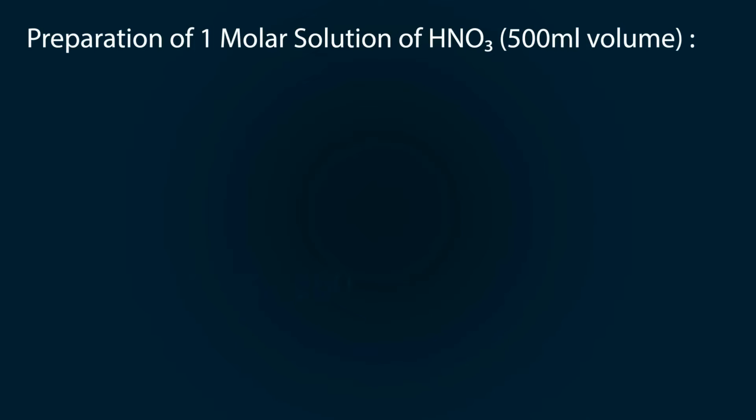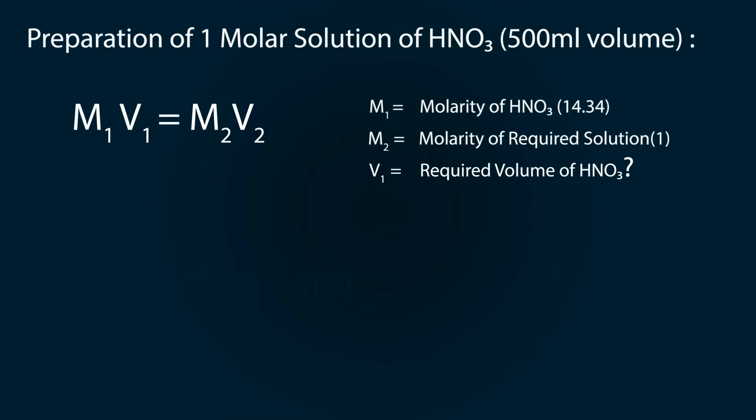Now we use the molarity formula M₁V₁ equals M₂V₂, where M₁ is the molarity of HNO₃ which is 14.34, M₂ is the molarity of our required solution which is one molar, V₁ is the